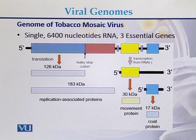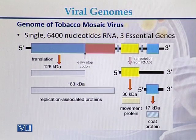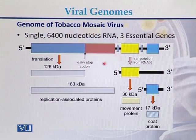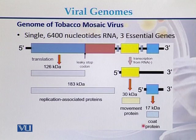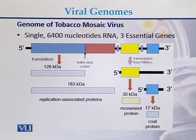The genome of tobacco mosaic virus is approximately 6,400 nucleotides in size. There are three essential genes present on this genome: the first gene encodes a replication-associated protein, and another gene is responsible for the production of movement protein.